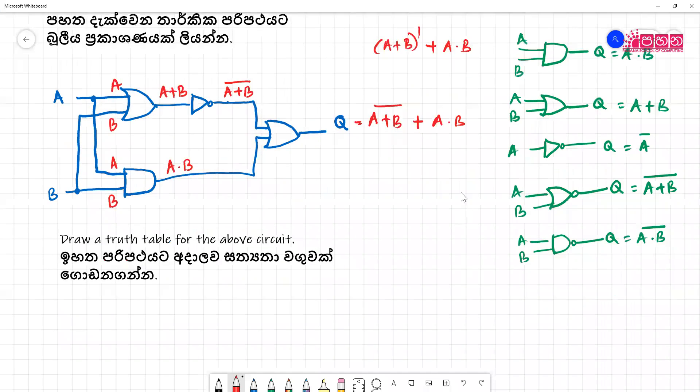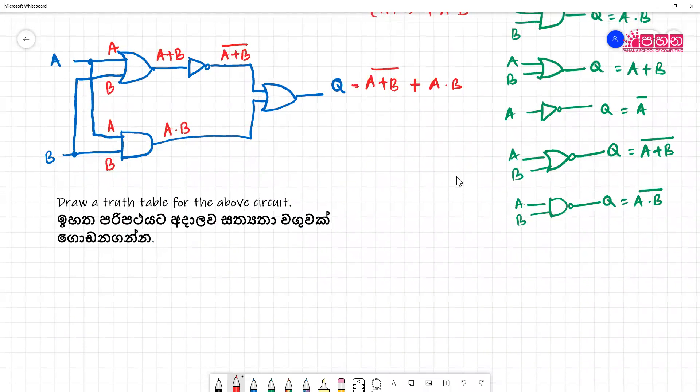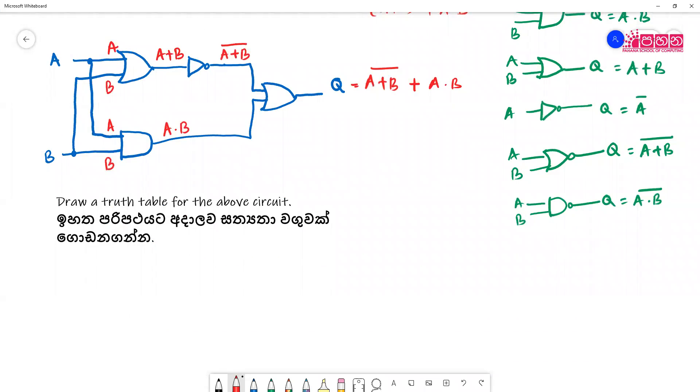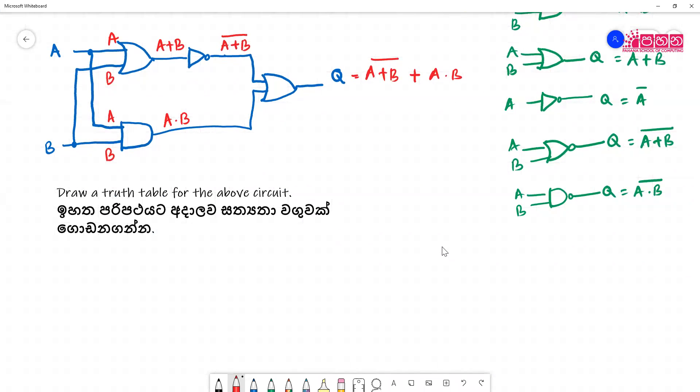Now you have been given to draw a truth table for this. We are in trouble if I just put A and B and Q, so we have to break down the whole Boolean expression. Let me explain you the first one and I hope the other one you will do it alone. So I will say this is A.